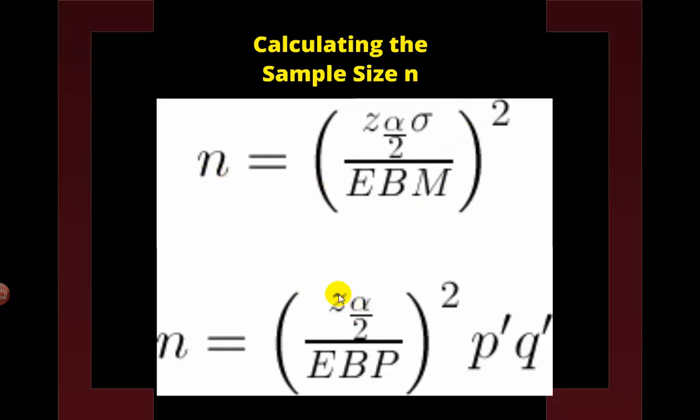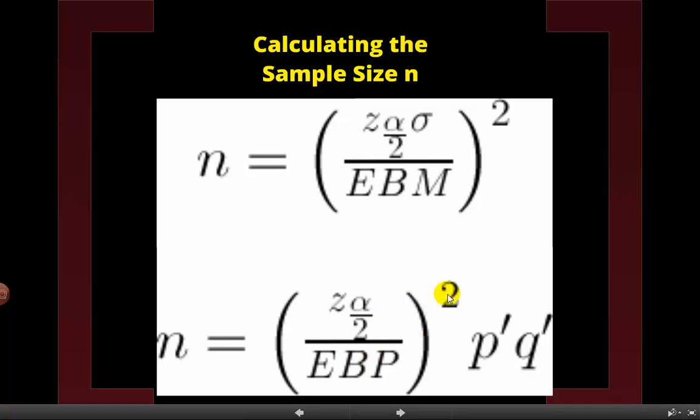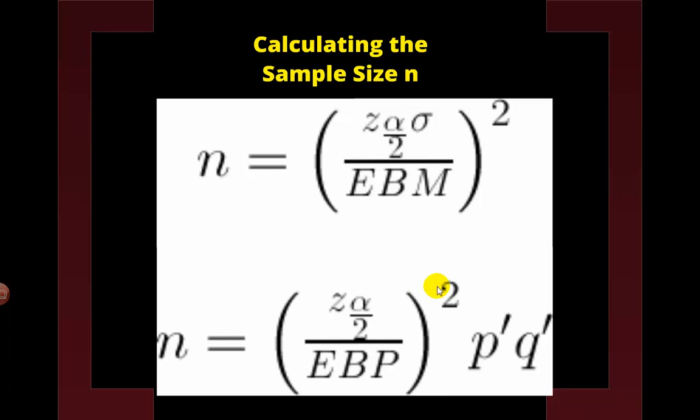If we are doing a proportion, we take our z value, 1.96, divide it by our error, square that, and then multiply it by p prime times q prime. That will give us our sample size that we need to calculate these things out. So this is how we come up with these things, and these are very useful. So this is how they can figure out that asking 1,500 people will give us enough of a sample size to estimate what the entire population of the United States wants to do.